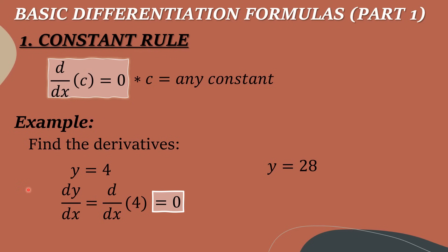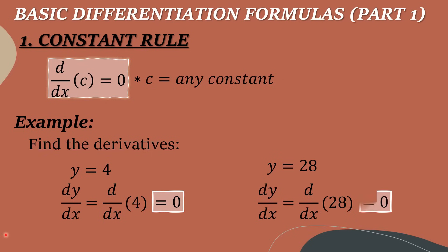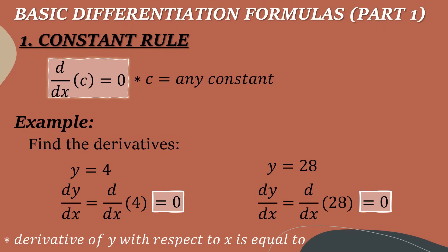Another example: Y equals 28. The derivative of Y with respect to X, or dy/dx, equals the derivative of 28 with respect to X. Since 28 is a constant, therefore the answer is also 0. This is read as: derivative of Y with respect to X is equal to — that is the proper way to read the given differentiation formulas.